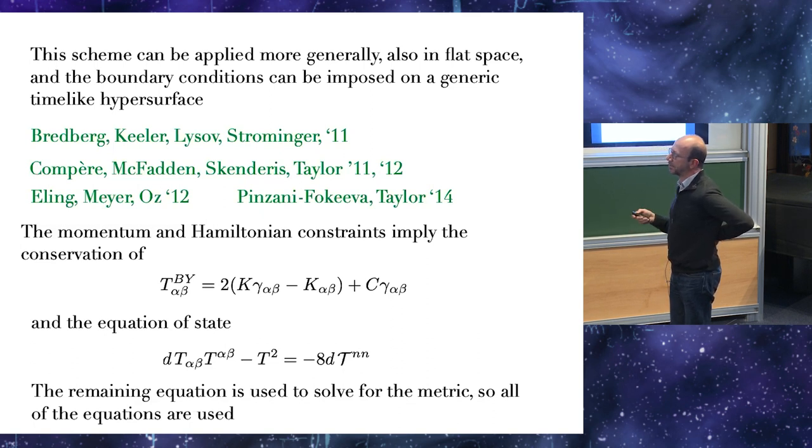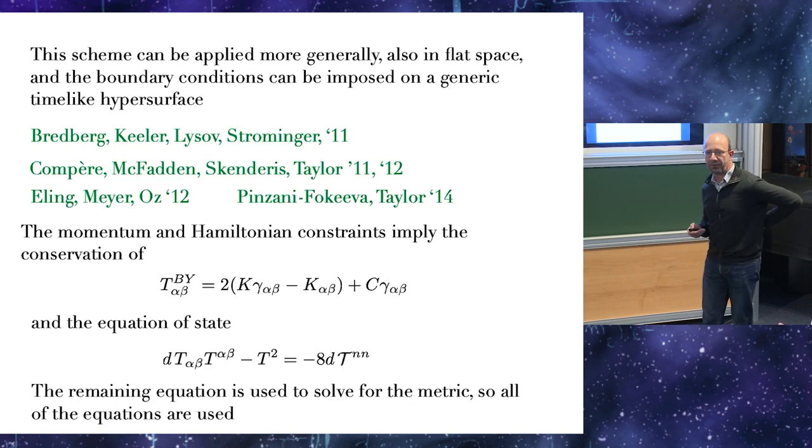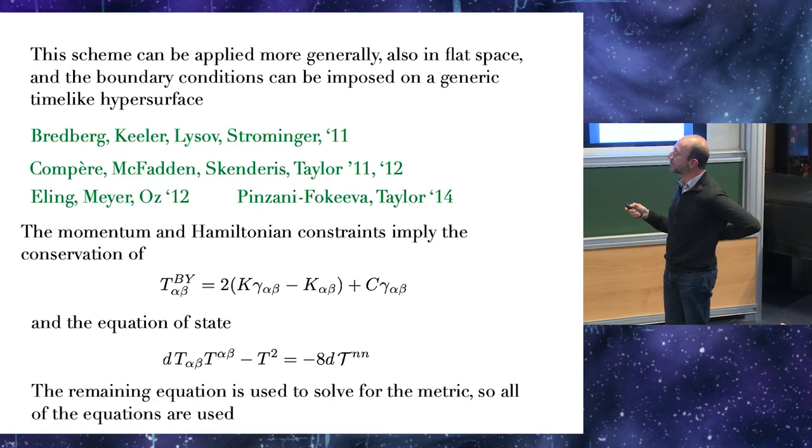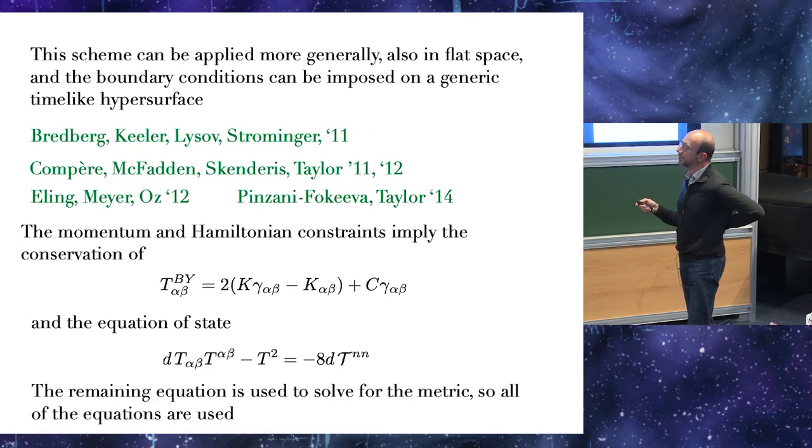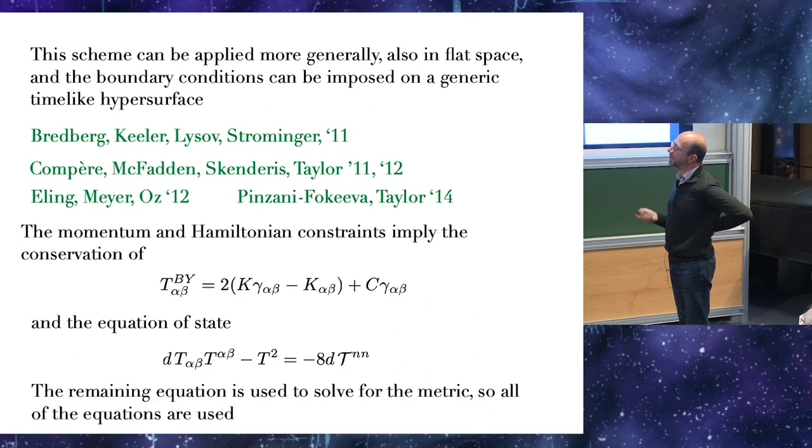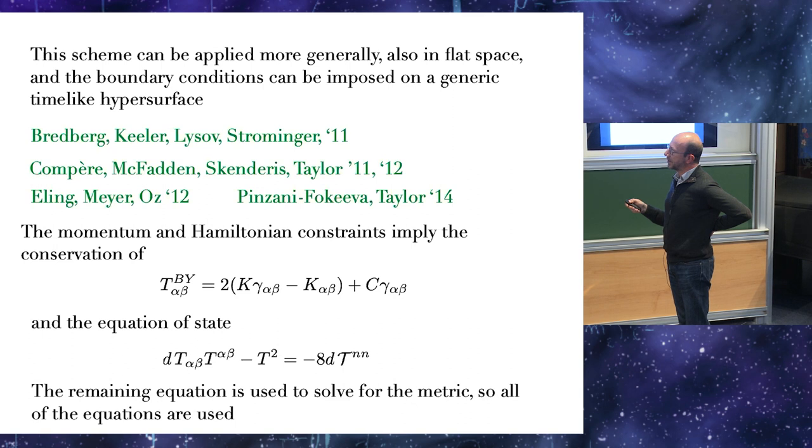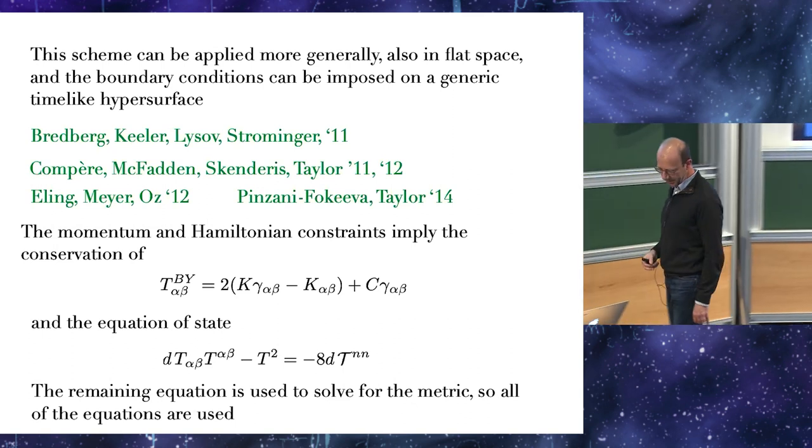But this, as a formal scheme, can still be applied and it leads to some results. The reason you can do it is that you just take a hypersurface in any space. And the momentum and Hamiltonian constraints imply the conservation of the Brown-York stress-energy tensor with some equation of state. And then there is one remaining equation which is used to solve for the radial evolution of the metric. So in this scheme you use all of the Einstein equations. And this is automatically conserved. In fact, it is automatically conserved for any constant C. So there is an ambiguity actually in this scheme. In the true holographic correspondence this is fixed by requiring that this remains finite when you go to the boundary. But if you are just in a finite surface, there is no reason to fix it to any value. So it remains a bit undetermined. But most of the time you set it to zero unless you have a specific reason to do otherwise.